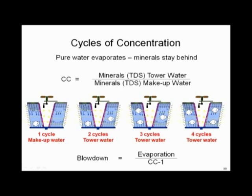If you've never really looked at cycles, this will help you understand what it is. Here's a formula for it — it's based on the blowdown rate of the tower versus the evaporation rate. If the blowdown rate is equal to the evaporation rate, you've got two cycles of concentration. We need to think about this because the code for the first time is specifying the cycles of concentration on your cooling tower, and you're going to have to deal with this.